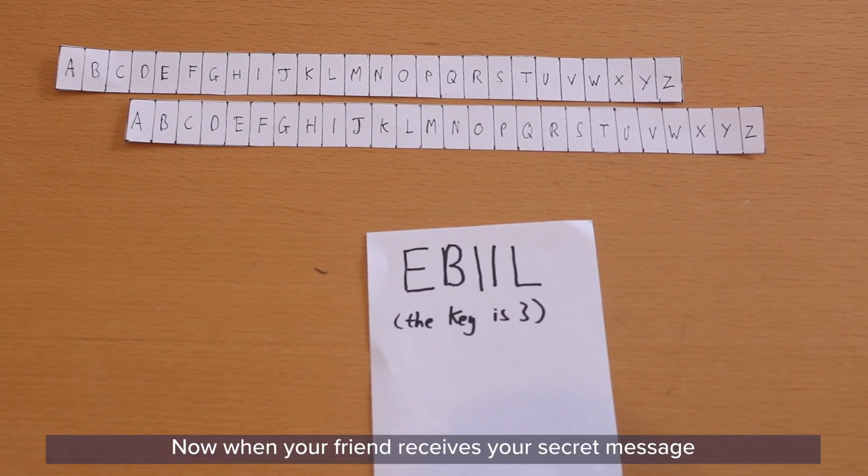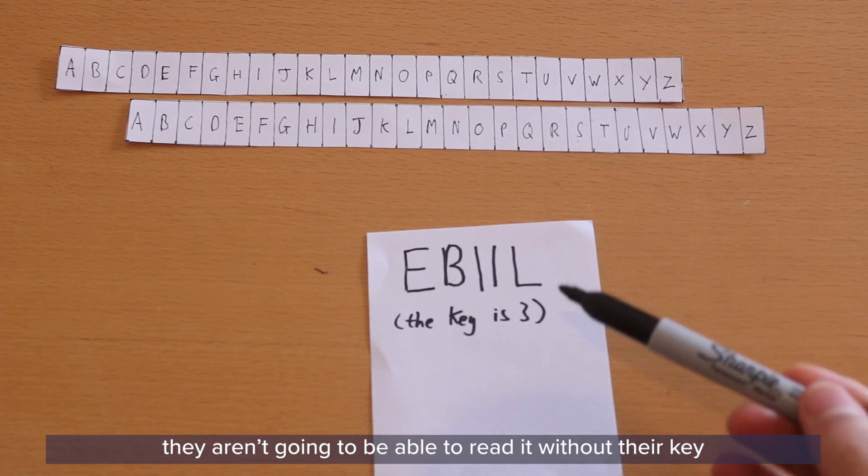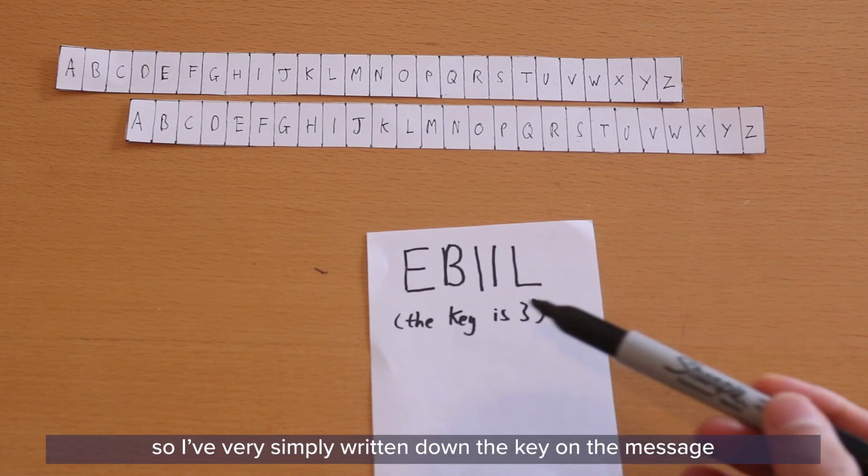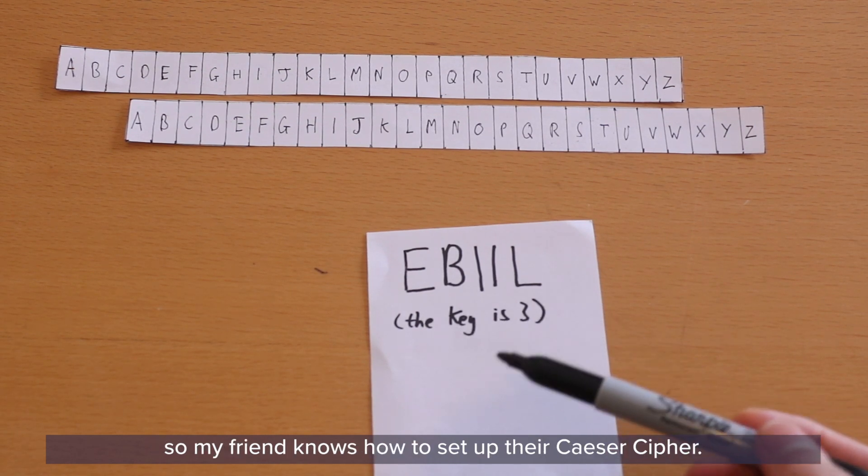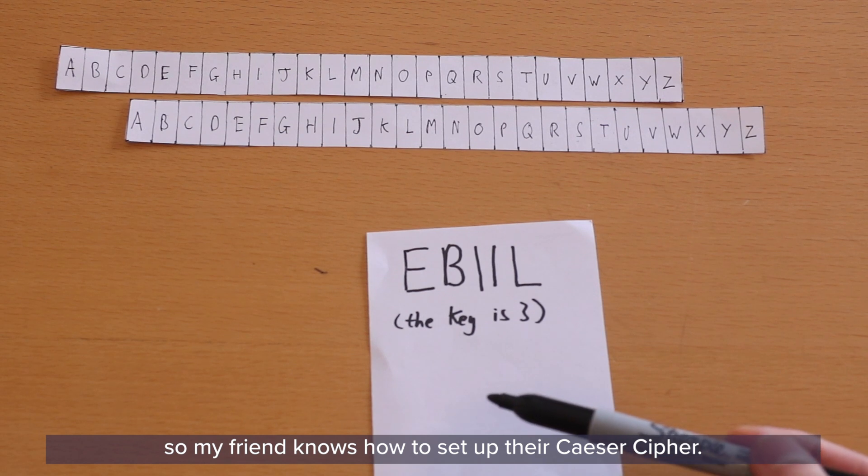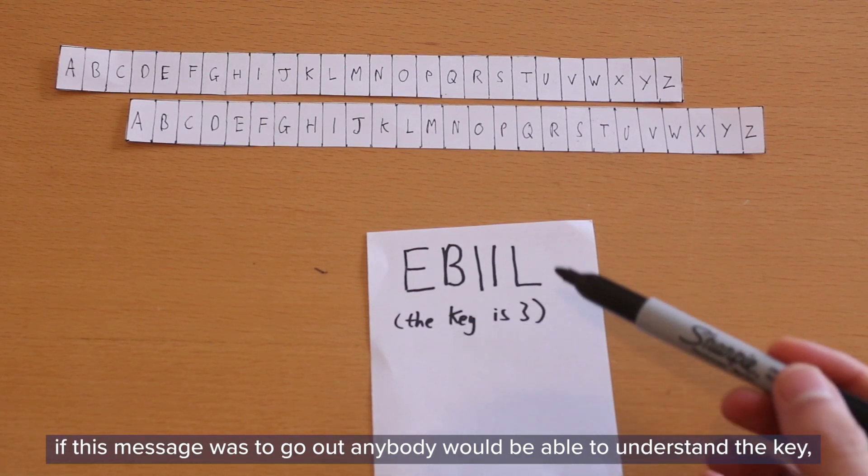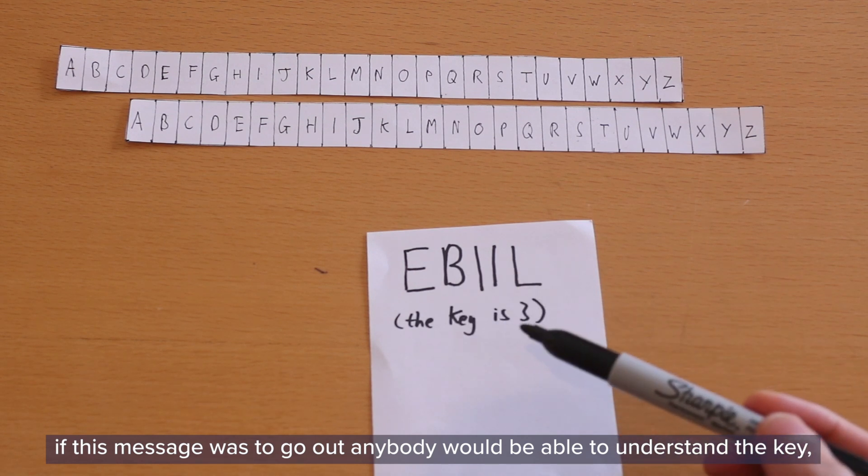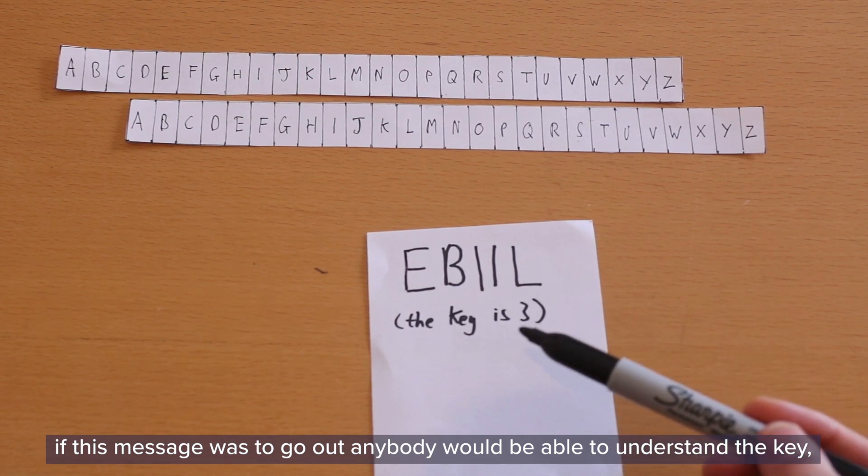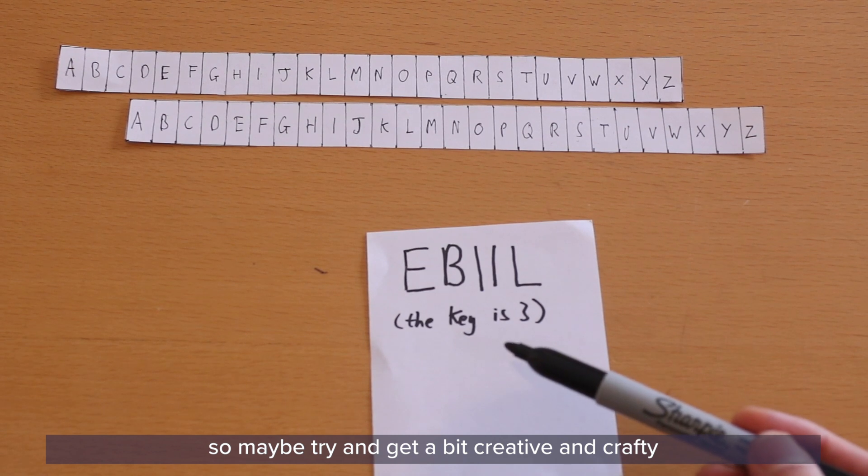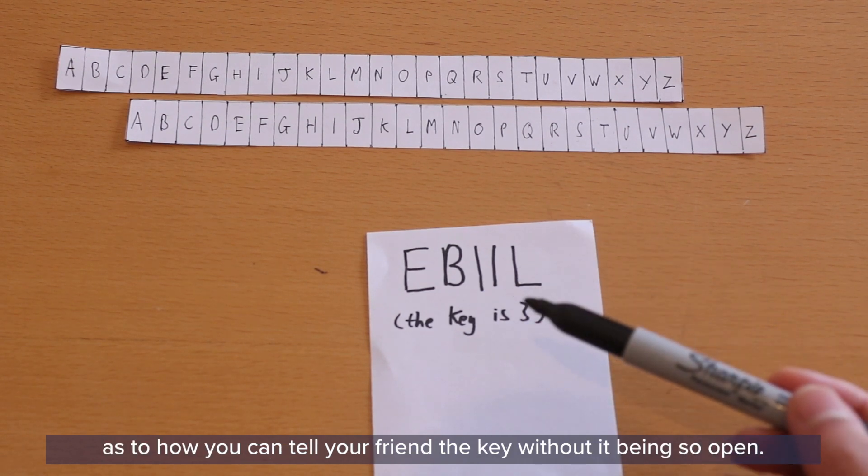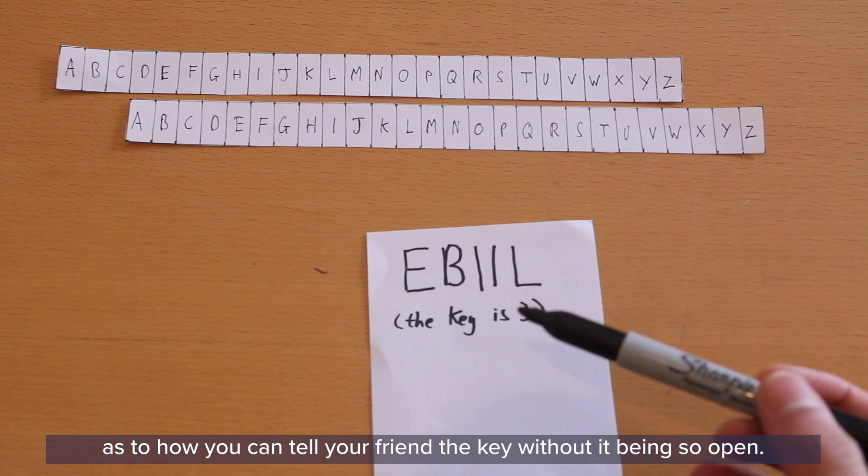Now when your friend receives your secret message, they aren't going to be able to read it without their key. So I've very simply written down the key on the message so my friend knows how to set up their Caesar cipher. Now do keep in mind however, if this message was to go out, anybody would be able to understand the key. So maybe try and get a little bit creative and crafty as to how you can tell your friend the key without it being so open.